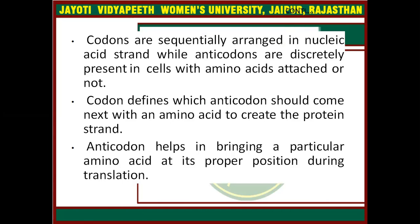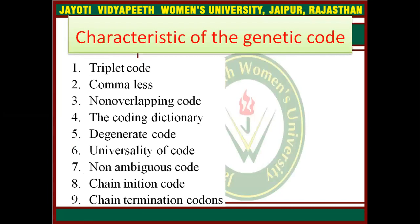Codon defines which anticodon should come next with an amino acid to create the protein strand. Anticodon helps in bringing a particular amino acid to its proper position during the translation process. What are the characteristics of the genetic code? They are: triplet code, comma-less, non-overlapping, degenerate code, universality of the code, non-ambiguous code, chain initiation codon, and chain termination codons.